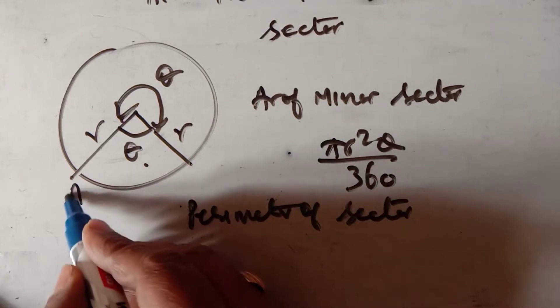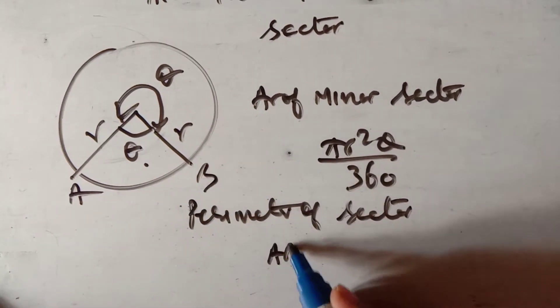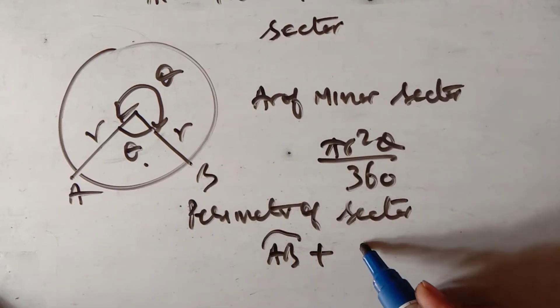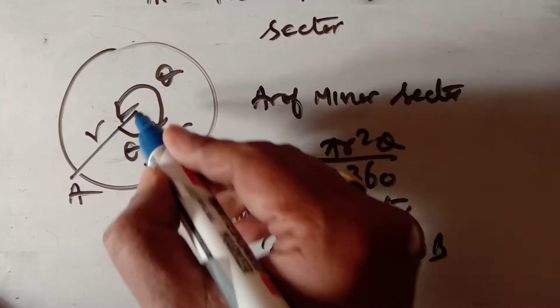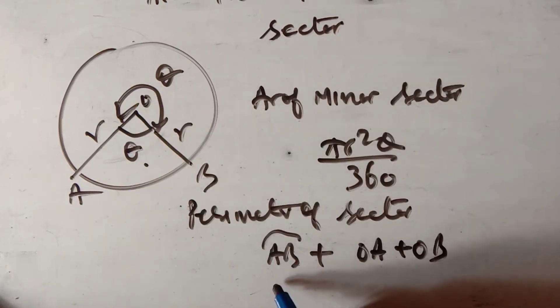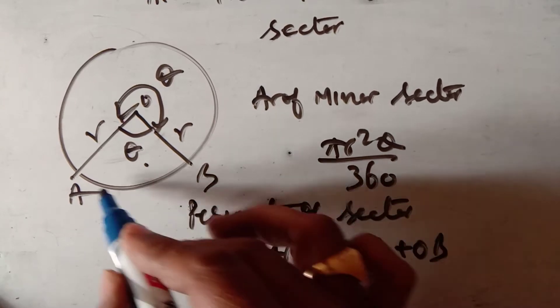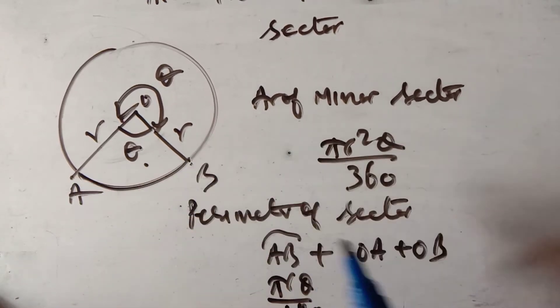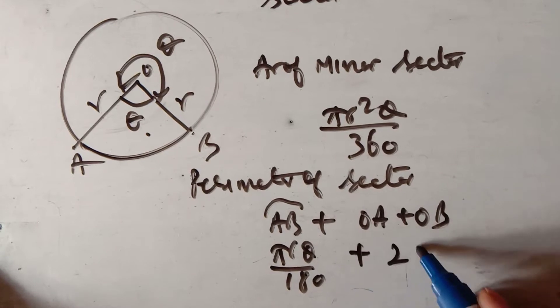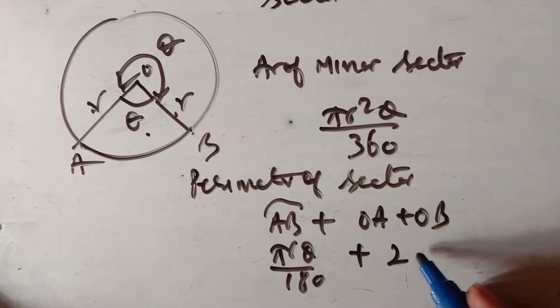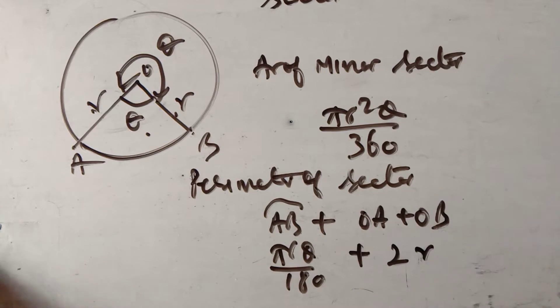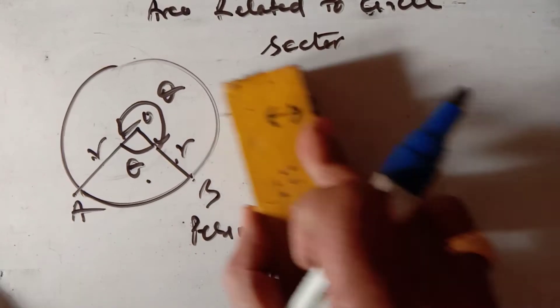The perimeter of the sector is the length of arc AB plus OA plus OB — that is, the arc plus the two radii. The length of arc AB is πrθ/180, so the perimeter equals πrθ/180 plus two radii.